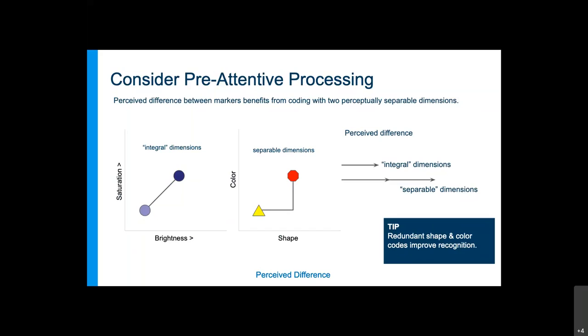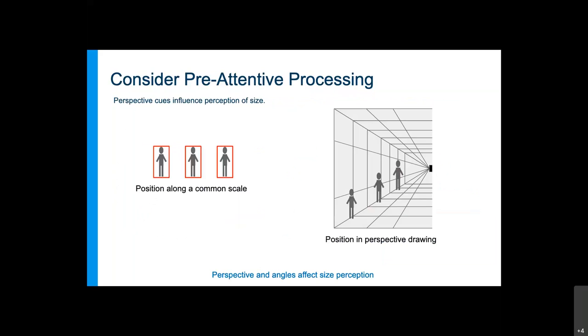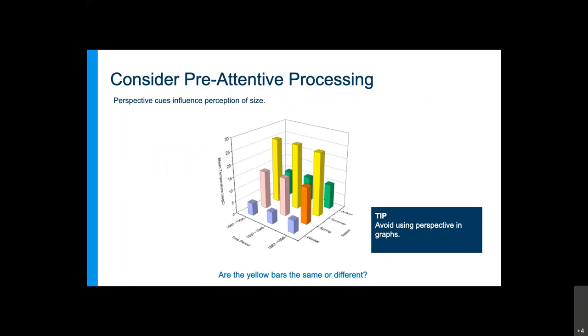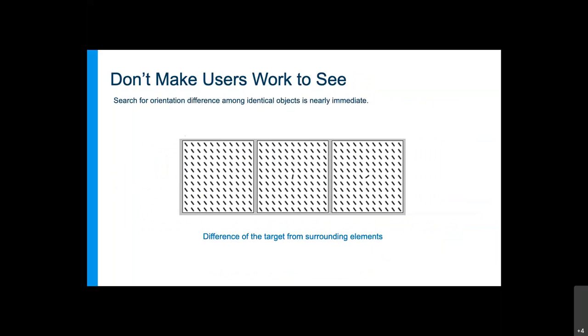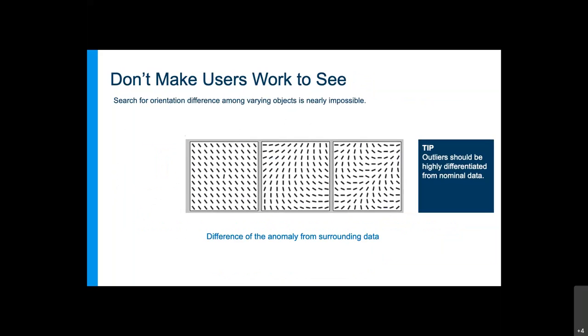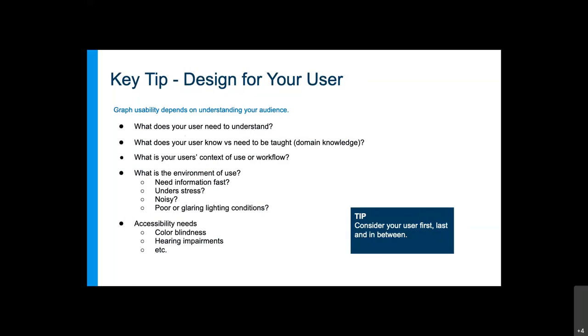We use octagons that are red and triangles that are yellow to indicate hazard or warning states in systems because those things push a perceived difference that people can readily see. Color changes, brightness, and saturation variations are almost impossible for people to see. So settling on redundant shape and color codes improves recognition. These things are fundamental to the way the visual system operates.